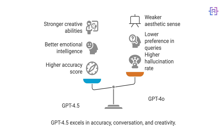Second, natural conversation: GPT-4.5 demonstrates what OpenAI calls improved emotional intelligence. It's better at understanding human intent, picking up on subtle cues, and responding with the right tone and depth. Human testers preferred GPT-4.5 over GPT-4.0 for casual queries 57% of the time, and for professional queries 63.2% of the time. Third, creativity and writing: GPT-4.5 shows stronger creative abilities and a better sense of aesthetic. Testers preferred it for creative tasks 56.8% of the time. These improvements result from new training techniques that allow OpenAI to train larger models using data derived from smaller ones, enhancing its ability to engage in more natural, human-like conversations.